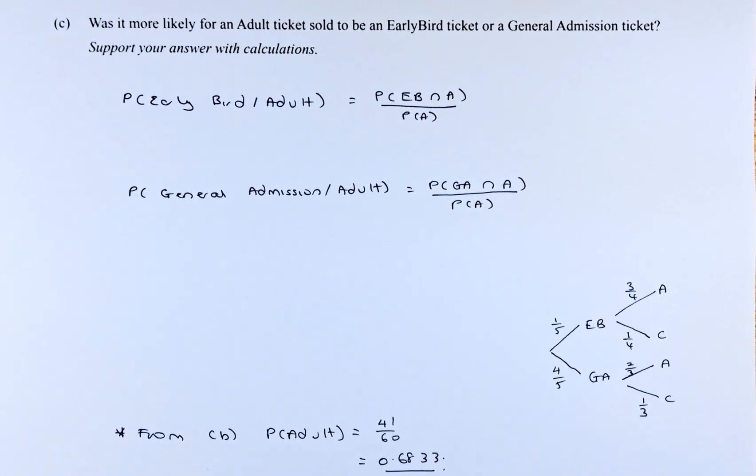Good day! In this video, we are going to solve question 1C of the 2021 NCA Level 3 probability concept paper. Without further ado, let's read the question.